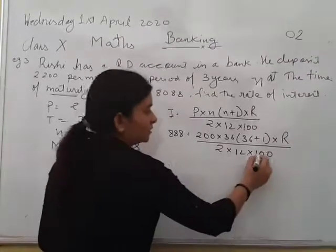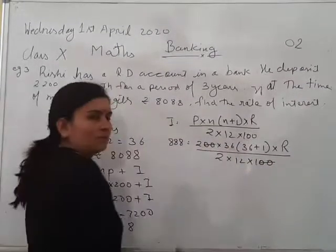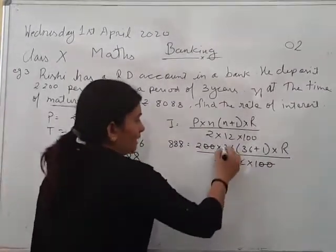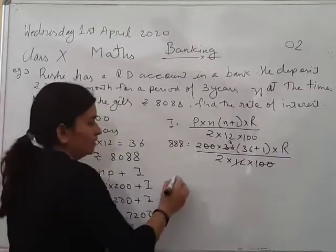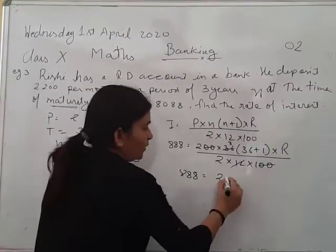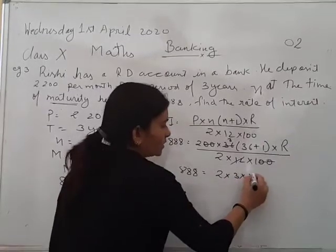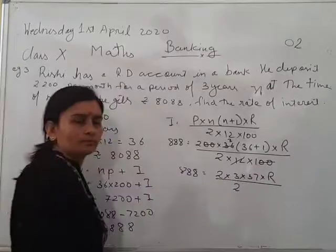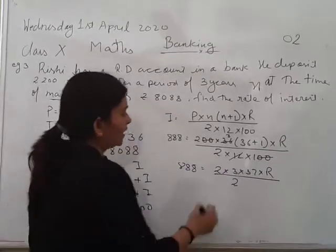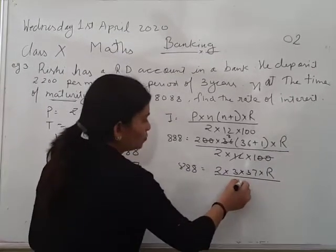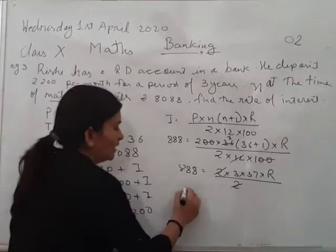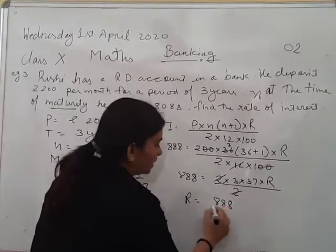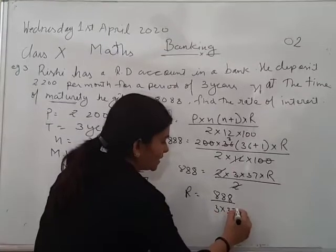Now simplify it. These two zeros will get cancelled from these two zeros. Now the remaining term is 2 into 3 into 37 into R upon 2. Now what we can do? This 2 will also get cancelled.